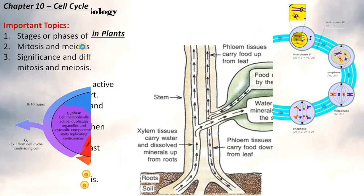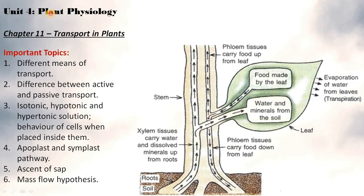Coming to Unit 4 that is Plant Physiology which is dedicated to understanding of plants and plant physiology. Important topics are different means of transport, difference between active and passive transport, isotonic, hypotonic and hypertonic solution, behavior of cells when placed inside them, apoplast and symplast pathway, ascent of sap, mass flow hypothesis.